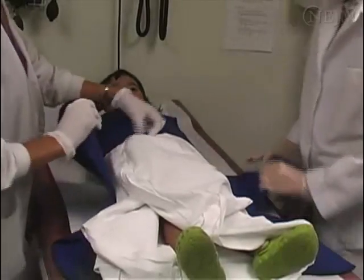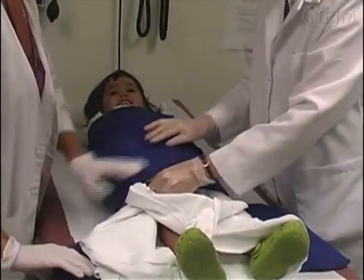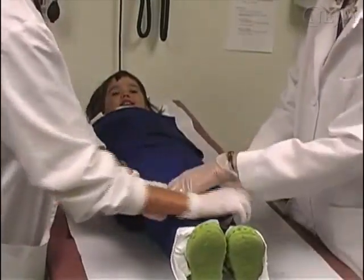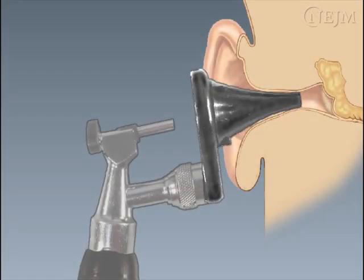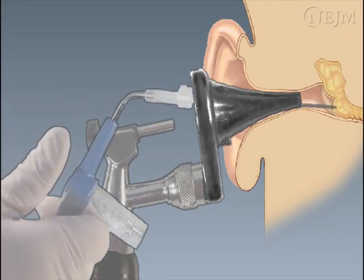First, fully immobilize the child in a papoose board and secure the child's head. Cerumen should be removed before you begin the procedure. We will demonstrate the procedure itself with this animation, which shows the steps from the coronal view. Under direct visualization, advance the needle toward the tympanic membrane while keeping your thumb poised over the orifice of the tympanocentesis aspirator without occluding it.